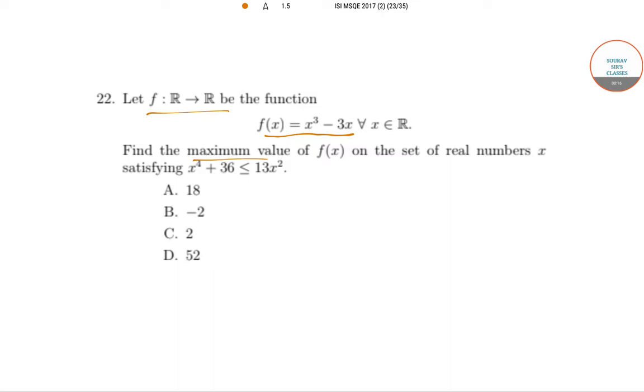What we need to find is the maximum value of f(x) on the set of real numbers which satisfies a given quadratic inequality. I say quadratic inequality because the inequality that we have is x to the 4 minus 13x squared plus 36 less than equal to 0. So although it is a quadratic inequality, the degree of x is 4, the highest degree.